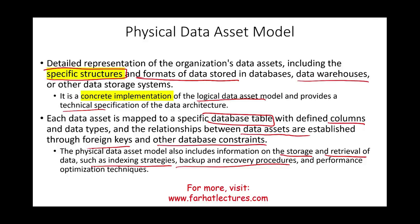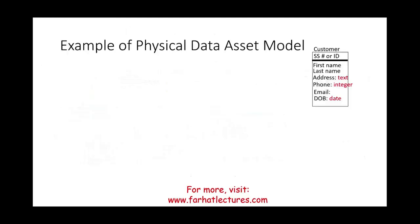Once you are building the physical data assets, you have to worry about everything. This is now no longer called an entity — it is called a table from a database perspective. This is called the key, and we have columns: first name, last name, and so on. For example, the address has to be text, the name has to be text. The phone number has to be integers. The email has to be email-formatted. The date of birth should have a date format — month two digits, day two digits, and year either two or four digits. Here you are being more specific.